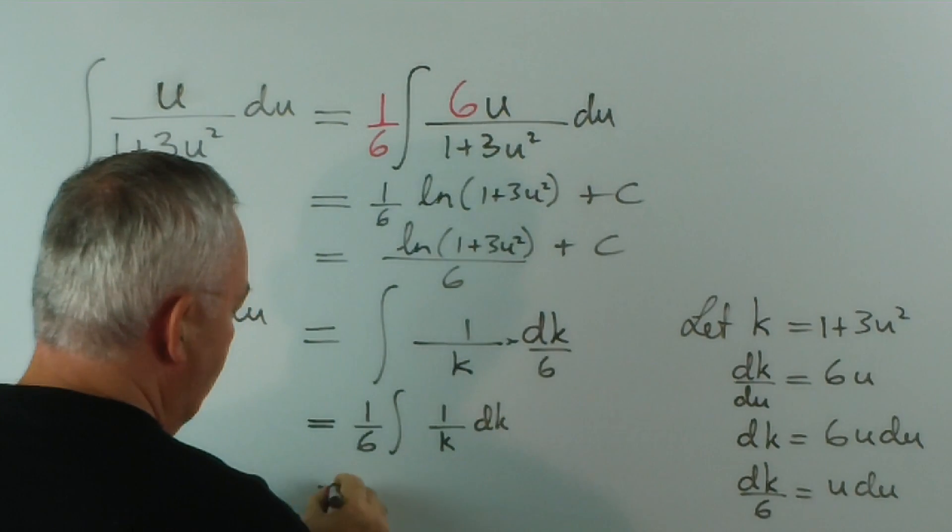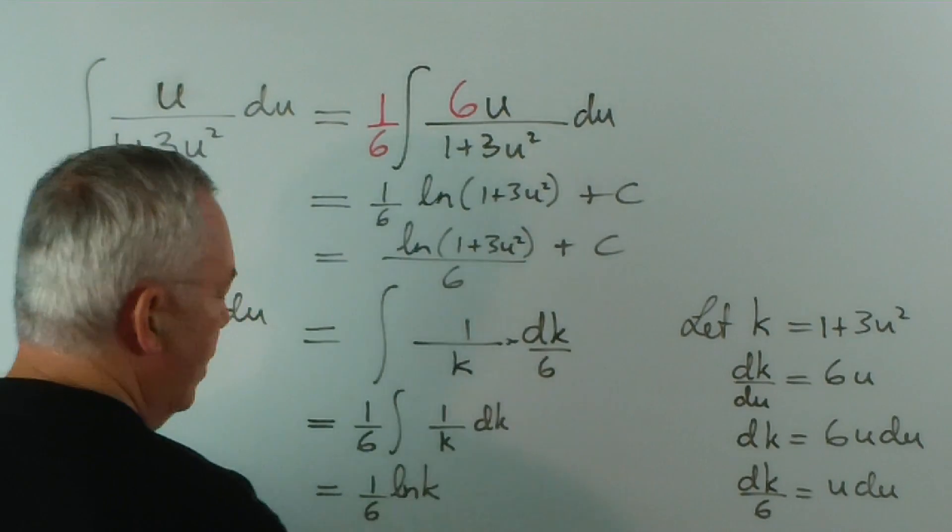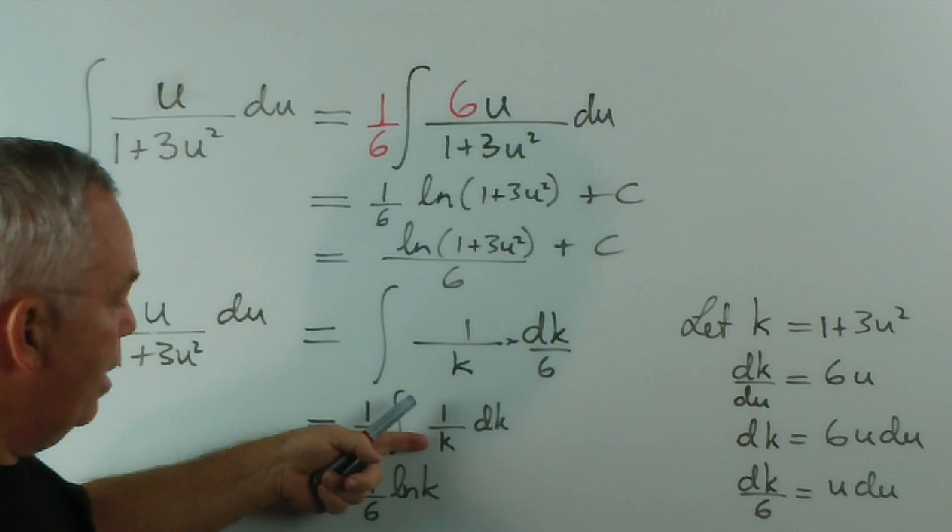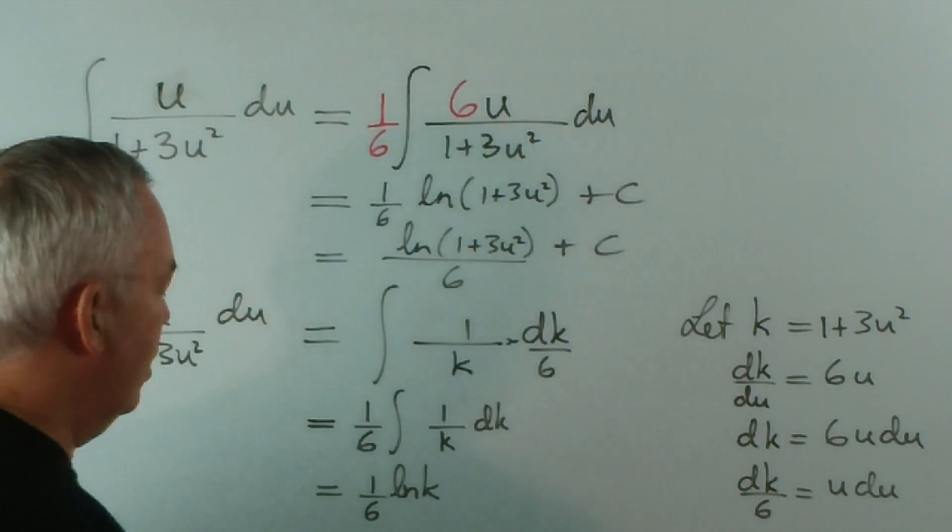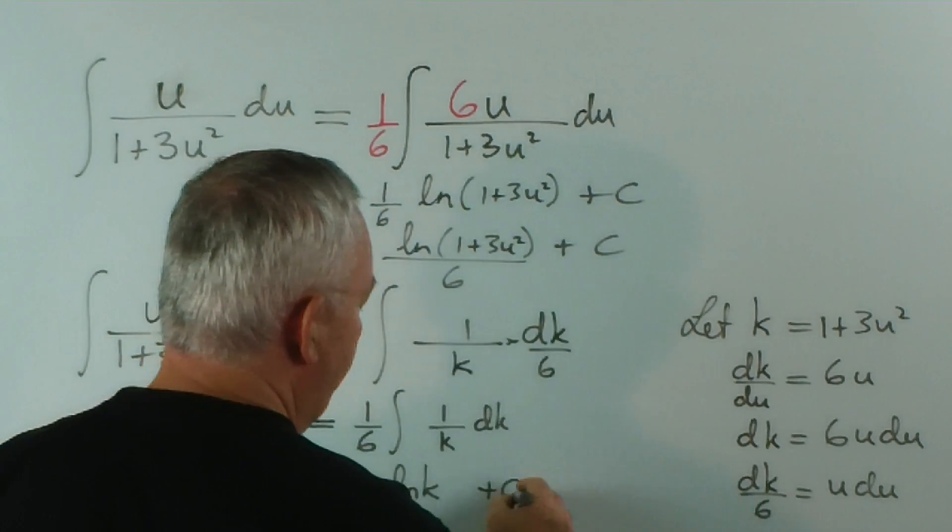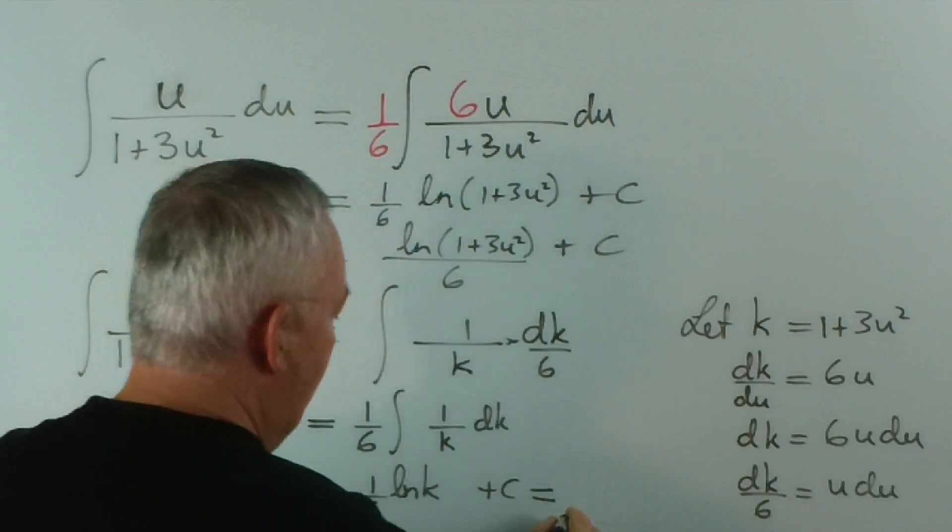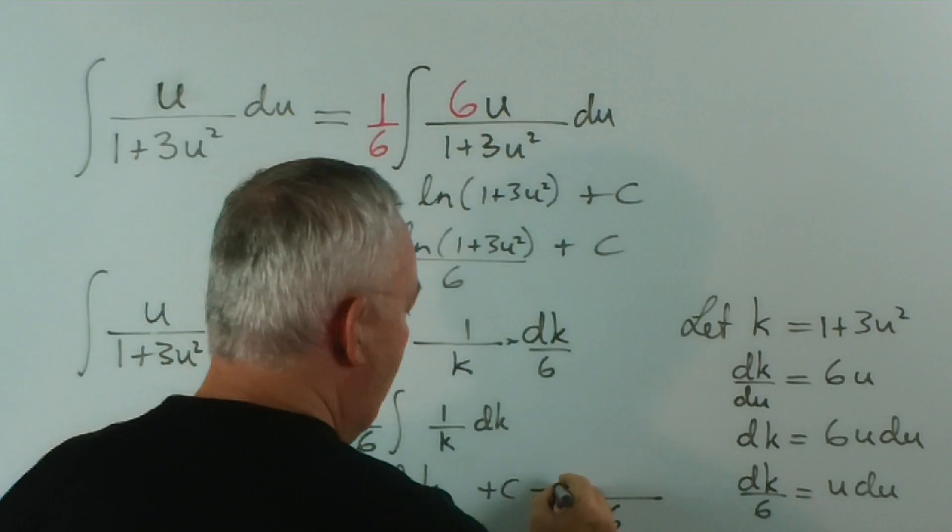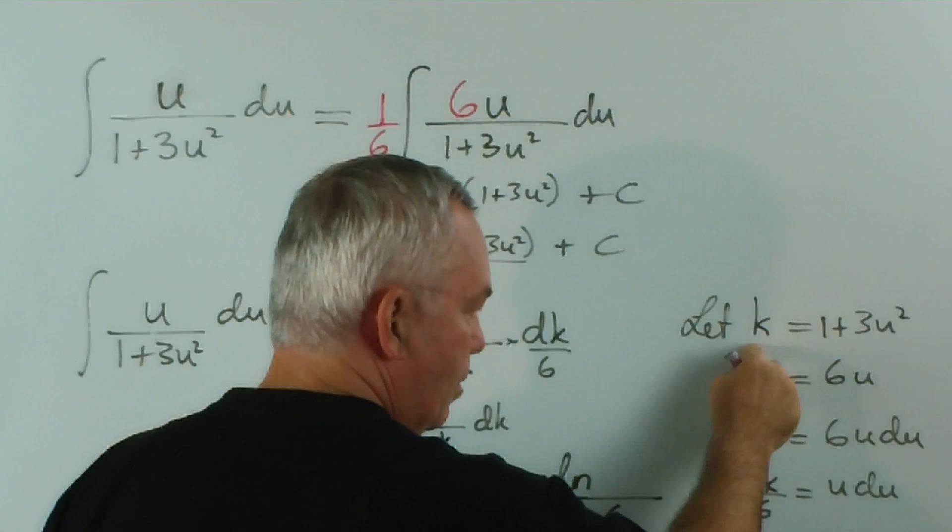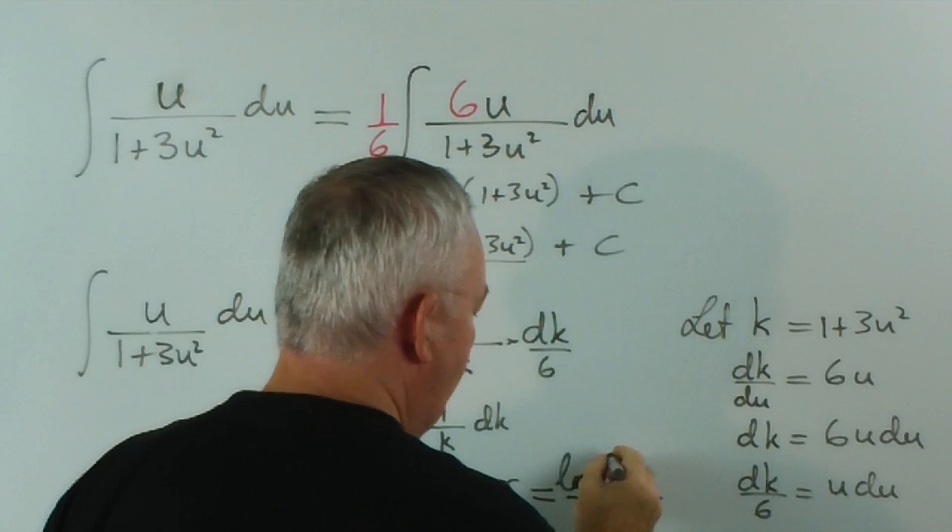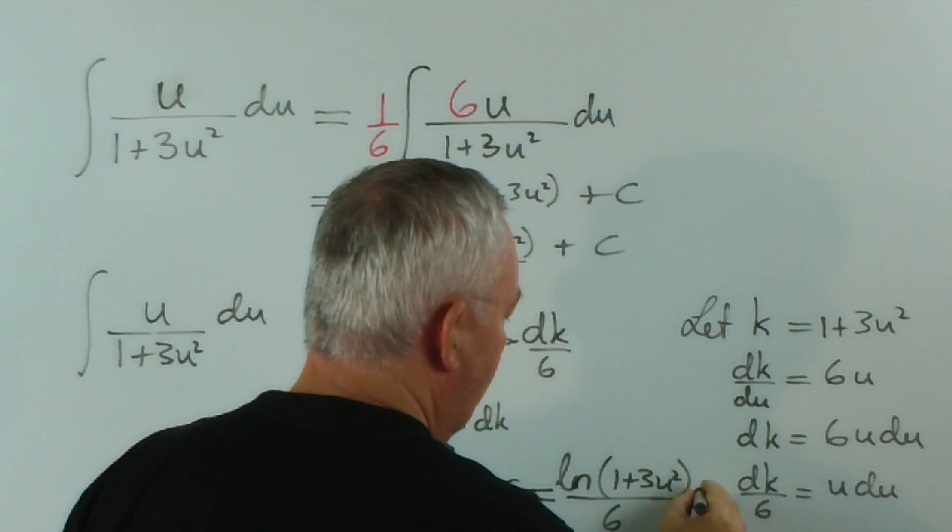Which is 1 sixth log k, because you now see very obviously the derivative of k with respect to k is 1. So, we have the derivative on the top, plus a constant. And I don't have room to keep going down, so I'll go sideways. Put this over 6, and we have log of k. And if we replace k again with our original value, 1 plus 3u squared plus a constant.